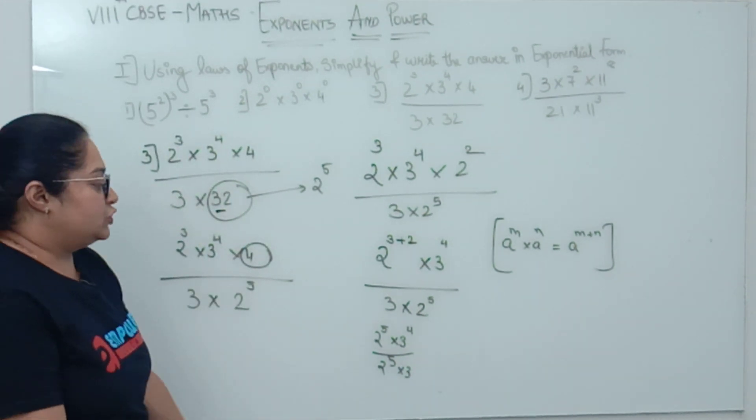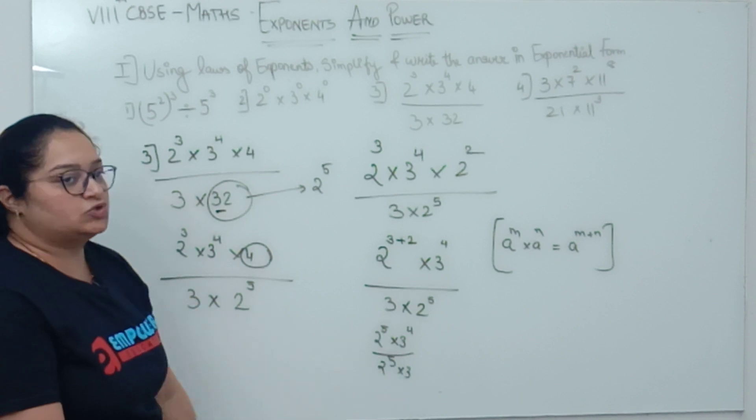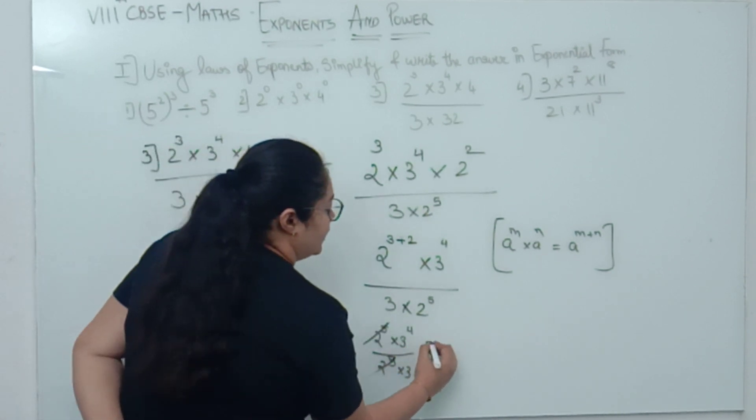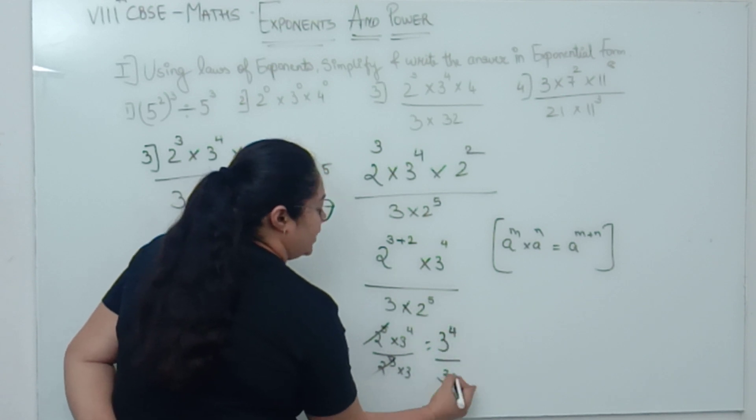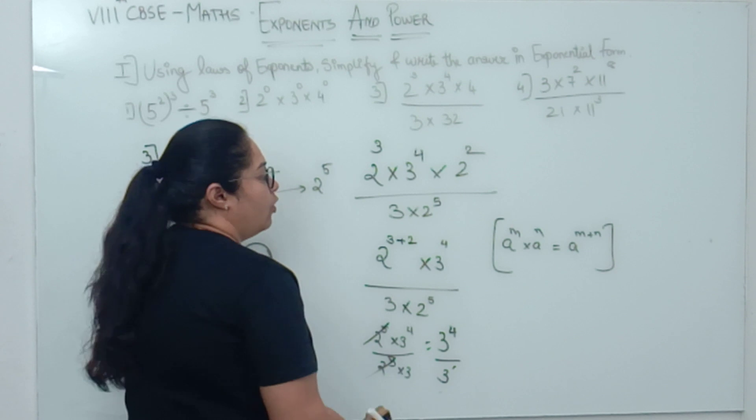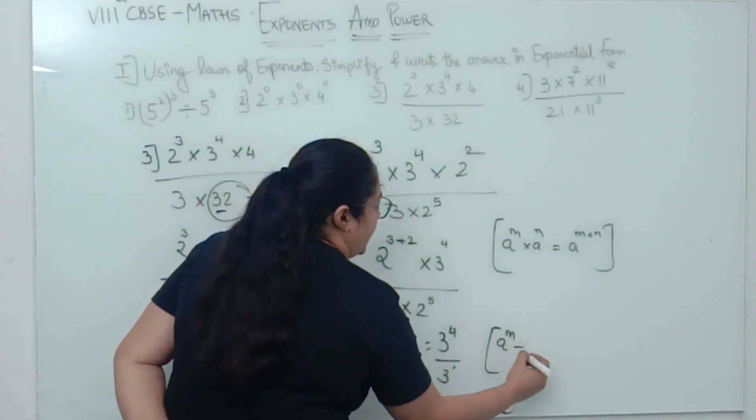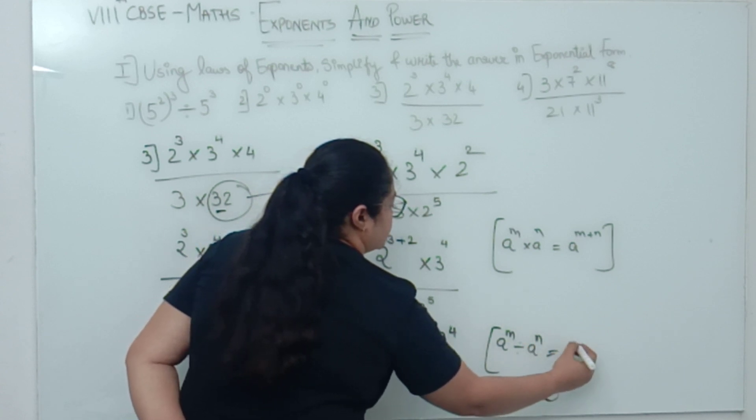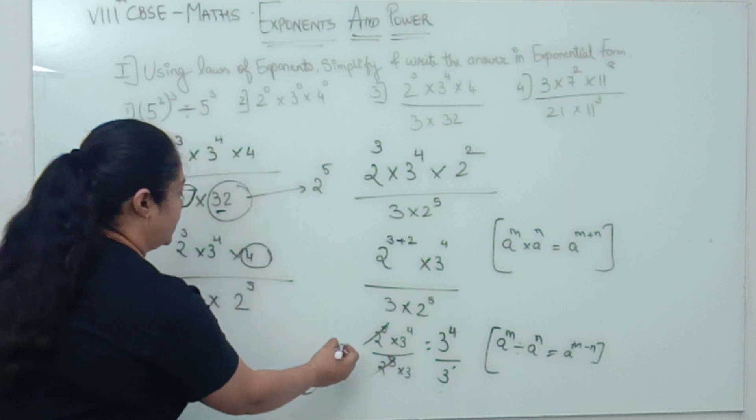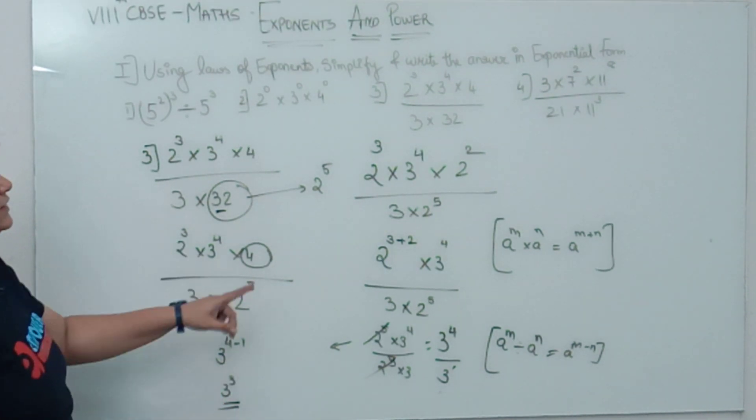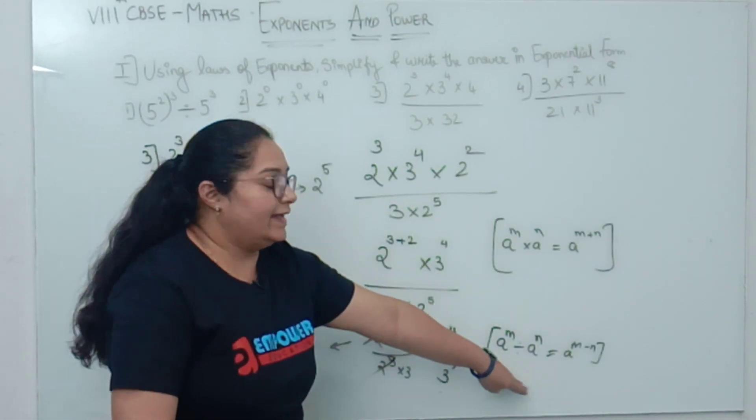Now, this is a division. 2⁵ divided by 2⁵, so these two will cancel. What remains? 3⁴ upon 3 raised to 1. So, which law will be applicable here? a raised to m divided by a raised to n equals a raised to m minus n. So, what will be your answer? 3 raised to 4 minus 1. So, the answer will be 3³. See? How big the sum was? How many laws applied? Two.